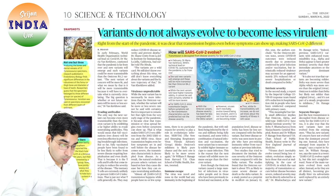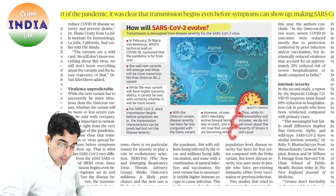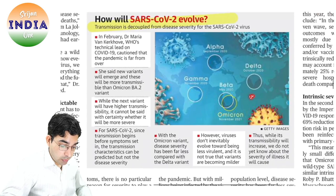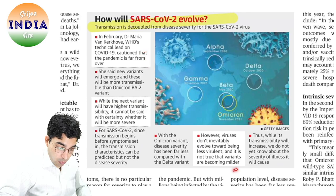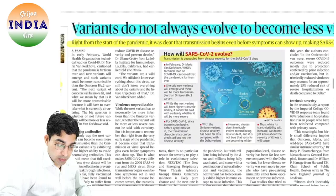Technology first — variants do not always evolve to become less virulent. जैसे जैसे variants नए आते हैं वो ज़्यादा severe होते हैं, कम नहीं. Omicron although mild था, but हमें guards drop नहीं करने — आगे अगर variant और deadly होगा then what? Viruses don't inevitably evolve toward being less virulent. It is not true that variants are becoming milder — guards drop नहीं करना है, COVID is still out there.